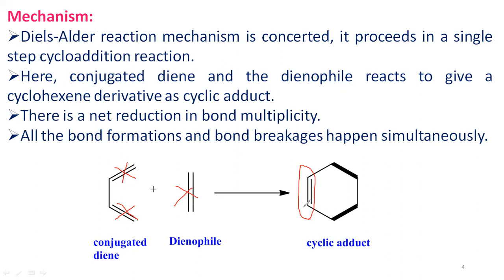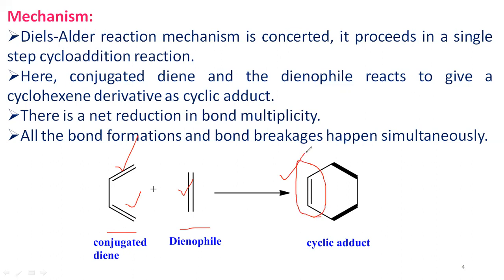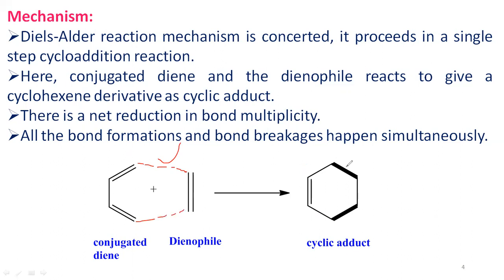In this reaction, the substrate molecules consist of a total of three pi bonds — two in the conjugated diene and one in the dienophile. In the product, there is only one pi bond — the newly formed one. So the total number of pi bonds is reduced by two — that is the net reduction of bond multiplicity. Two new sigma bonds and one new pi bond are formed.